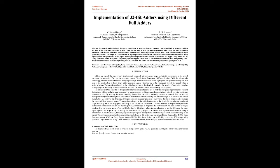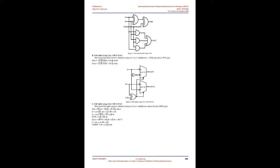Keywords: Carry Increment Adder (CIA), Carry Skip Adder (CSKA), Conventional Full Adder (FA), Full Adder Using 2x1 MUX (FA1), Full Adder Using 4x1 MUX (FA2), 2x1 MUX Based Full Adder (FA3), Ripple Carry Adder (RCA).